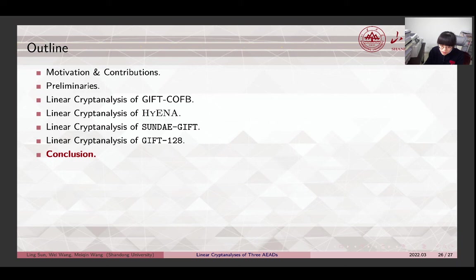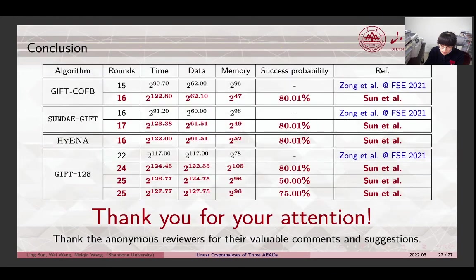Now we finish all the contents in the paper and give a conclusion. In this work, firstly we created specialized SAT problems for the search of linear distinguishers coordinated with the attack setting. With this method, we improved linear attacks on GIFT-COFB and Sunday GIFT. We proposed the first cryptanalytic result on Hyena. Also, we provided improved linear attacks on GIFT-128. That's all for the presentation. Thank you for your attention.